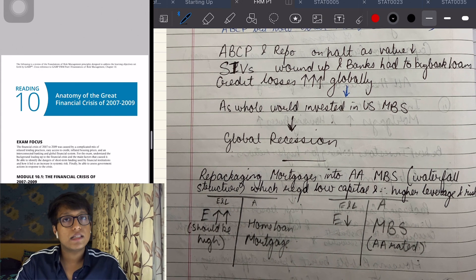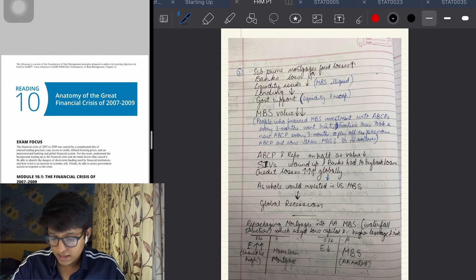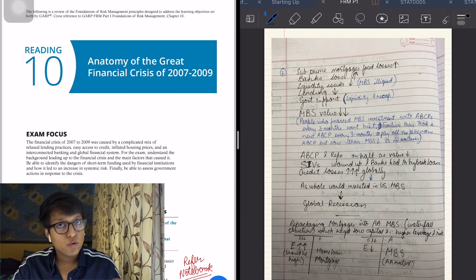Ultimately this resulted in a global recession. That was the crux of the crisis which has been explained in a very long way here - you can read through it.